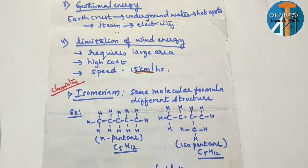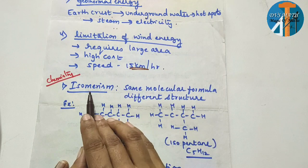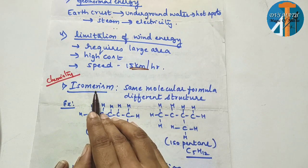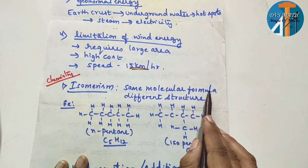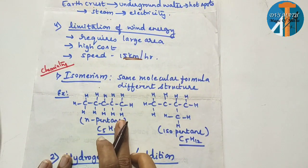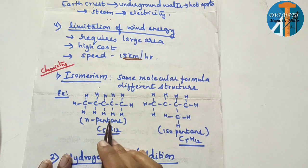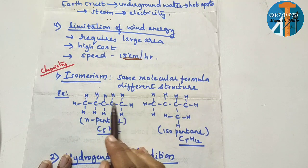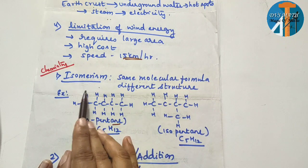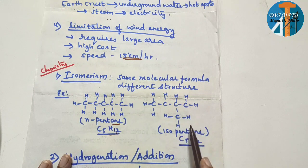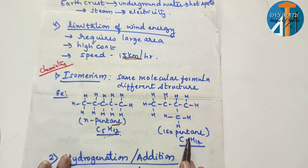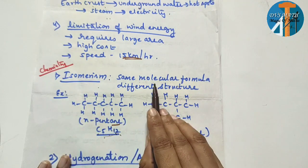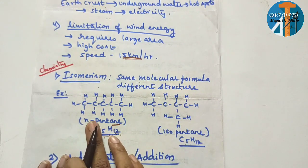Now chemistry — a very important question: isomerism. Isomerism is a property of carbon. Same molecular formula, different structure. Simple example: n-pentane and isopentane — both have 5 carbon atoms with single bonds between carbon atoms, but n-pentane has no branch while isopentane has a branch. Same molecular formula, different structure — that is isomerism.